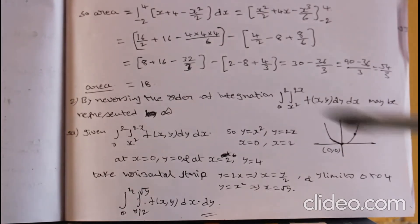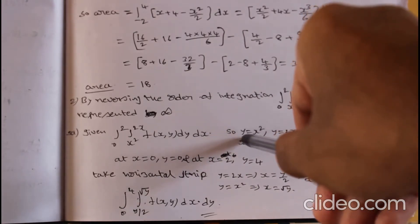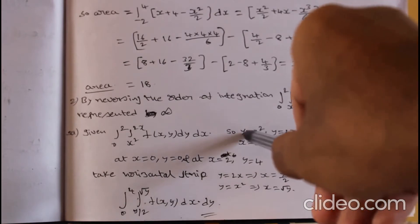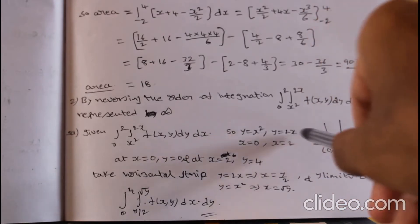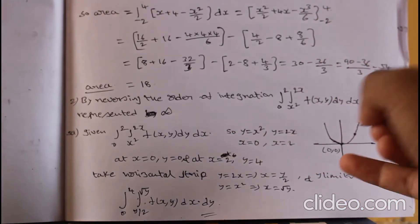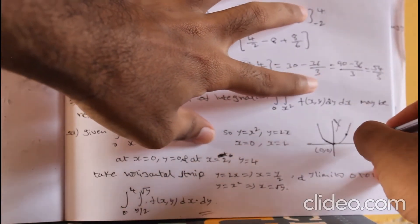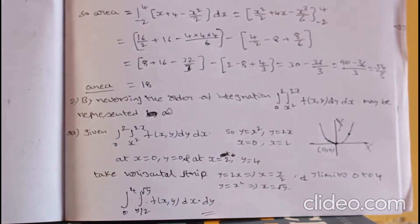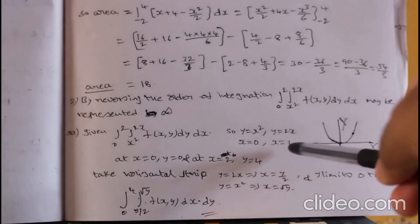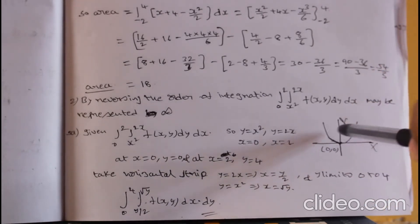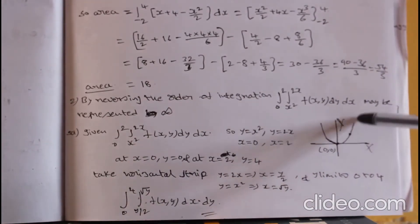Step one: draw the curve y = x². For any positive or negative value of x, y is positive, so the curve passes through (0, 0) and opens upward. This is the parabola.